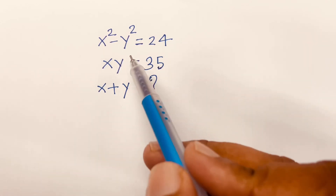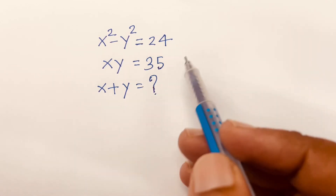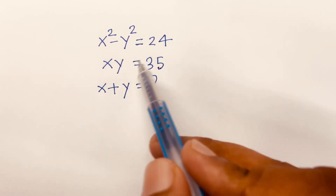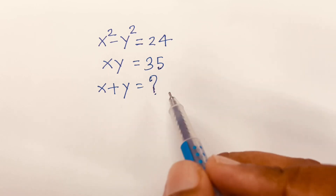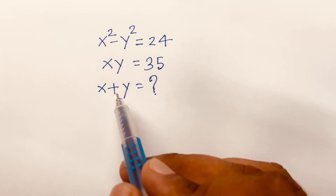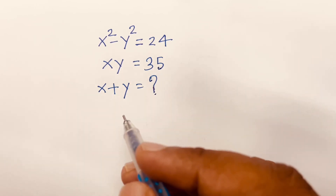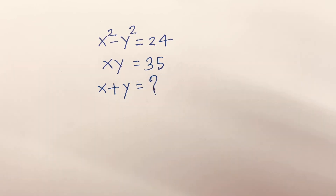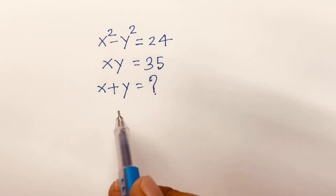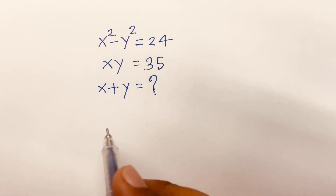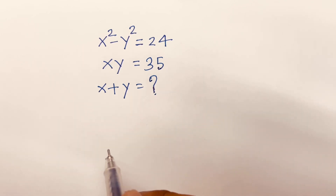How to solve x squared minus y squared equals 24 and xy equals 35, and we'll find out what is the value of x plus y. It is a Thailand Junior Math Olympiad question. Now I solve this question.